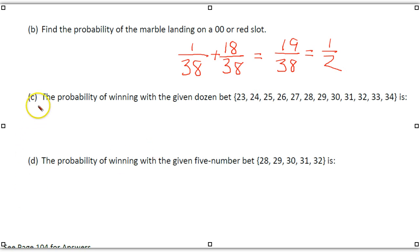All right. For letter C, the probability now of winning given the dozen bet, where there are 12 numbers here, whichever they are, and that would be 12 out of 38, which is 6 out of 19.